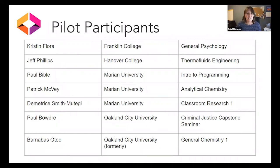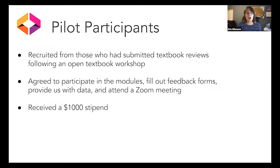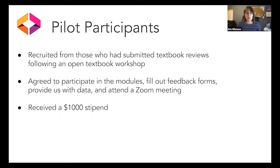Our seven faculty participants came from four institutions and six disciplines — chemistry, psychology, engineering, computer science, education, and criminal justice. They were recruited from faculty who had submitted textbook reviews following a workshop, and they went through a full application and acceptance process. They were paid a $1,000 stipend in exchange for participation, which included completing the modules, providing a syllabus, sharing various data, and switching to a zero-cost textbook. As pilot participants, they also filled out an evaluation form on each of the six LibGuide modules and attended a Zoom feedback session.